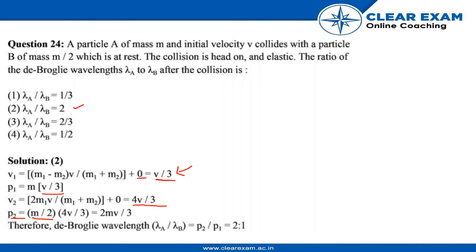Because the mass is dividing into 2 after the collision. And therefore the de-Broglie wavelength, that is lambda A by lambda B, would be equal to P2 by P1, which would be in the ratio of 2 is to 1. So the correct option is 2.